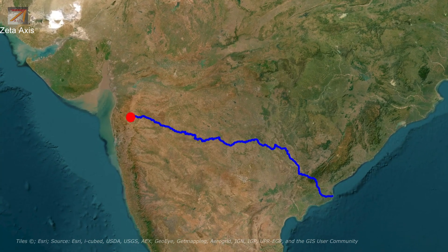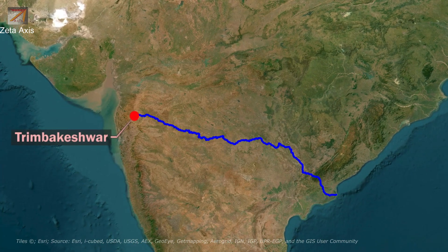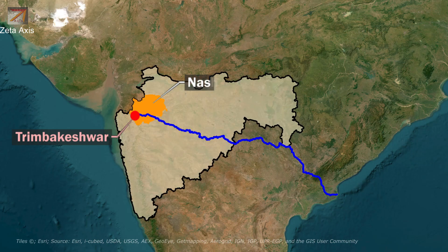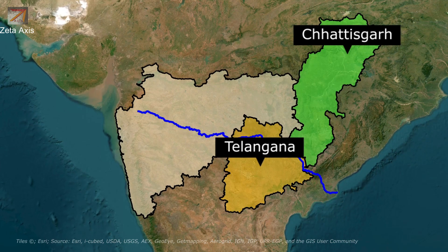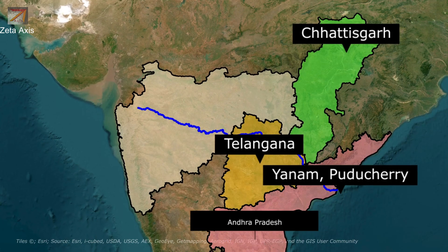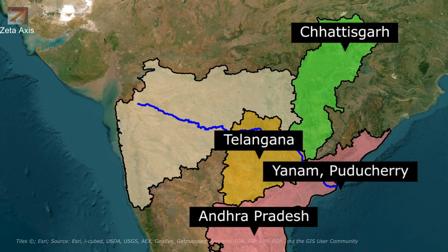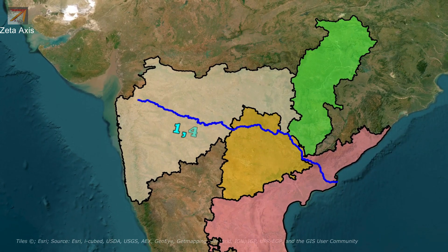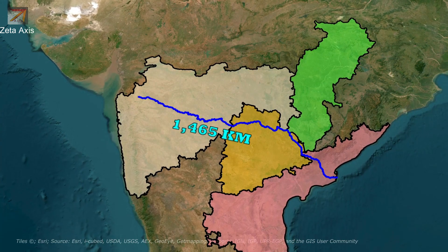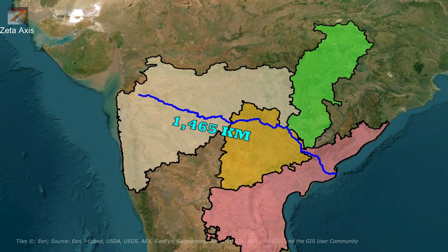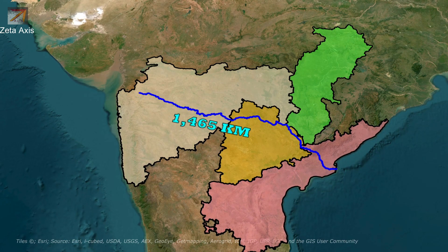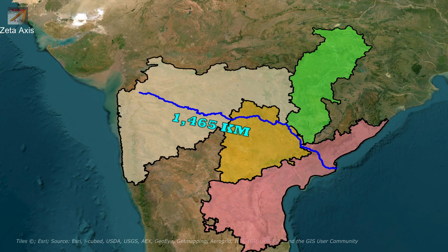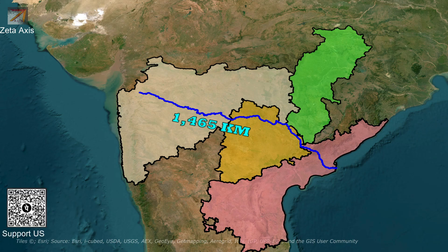The Godavari River originates in Trimbakeswar, Nasik of Maharashtra. It flows through Telangana, Chhattisgarh, Indian territory of Pondicherry and Andhra Pradesh before flowing into the Bay of Bengal. Godavari River is 1465 km long, making it the 4th longest river flowing through India after Brahmaputra, Indus and Ganga, while it is the 2nd longest river flowing within Indian territory after Ganga River.